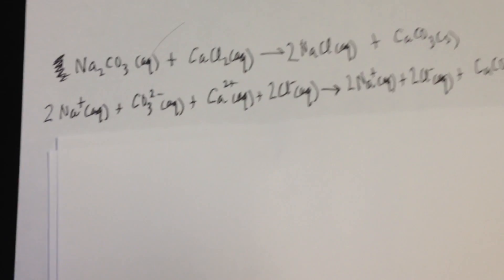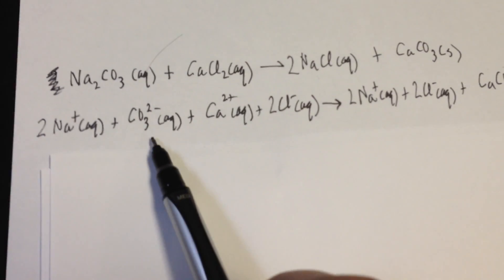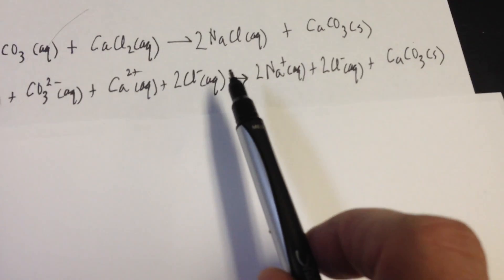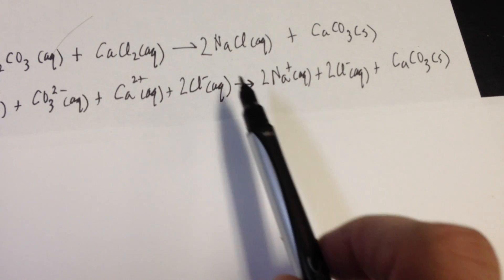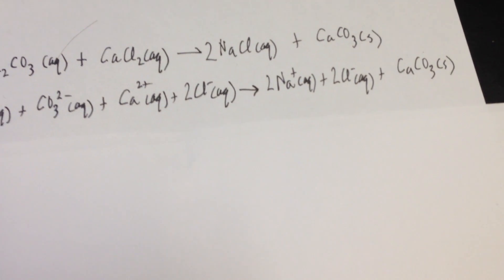So, I can write the ionic equation. Two sodiums and my carbonate are dissociated from each other. A calcium and two chlorides are dissociated from one another. And I form two sodiums and two chlorides, dissociated from one another, and a calcium carbonate that sticks together. It's insoluble.